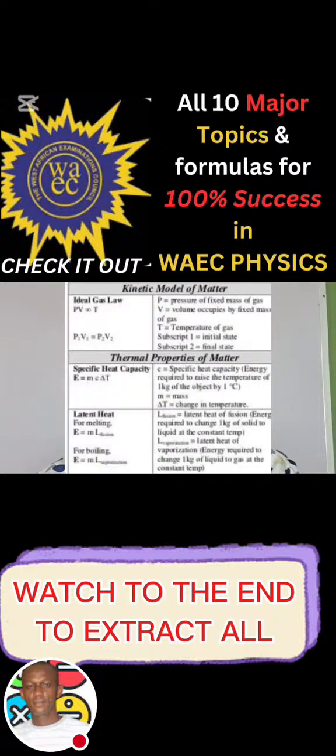The next one is kinetic model of matter. You must not forget that. Under that we have the ideal gas law. Generally all the gas laws, please try to go through all of them, be able to state them and the equation attached to it. This is an example. I think the general law: we have pv is proportional to temperature, and later gives us p1v1 is equal to p2v2. And generally also it can be p1v1 over t1 is equal to p2v2 over t2.